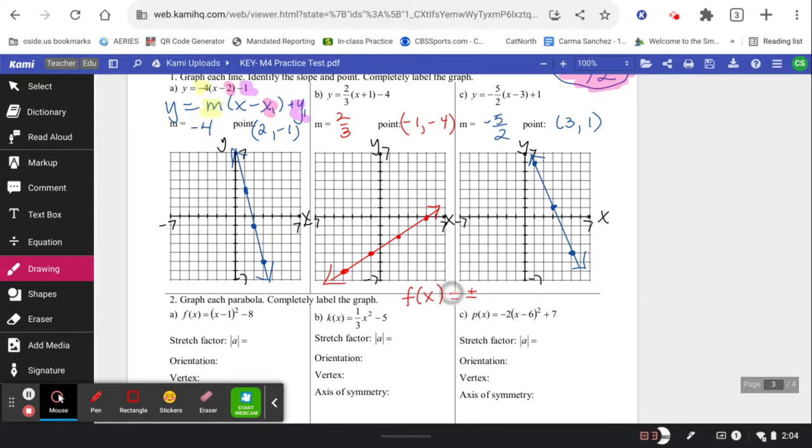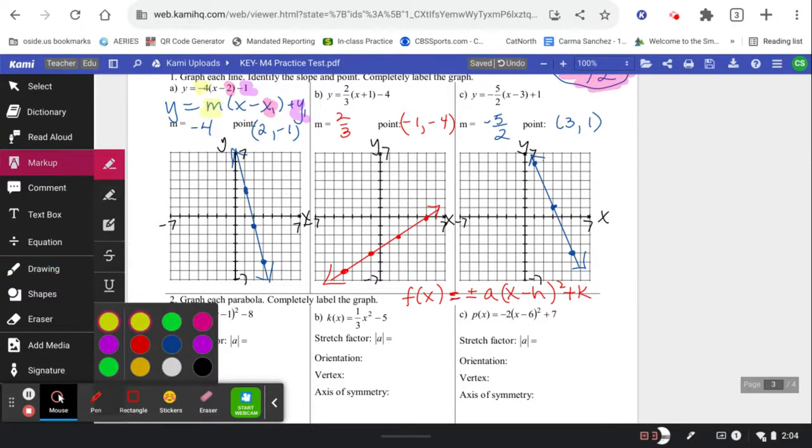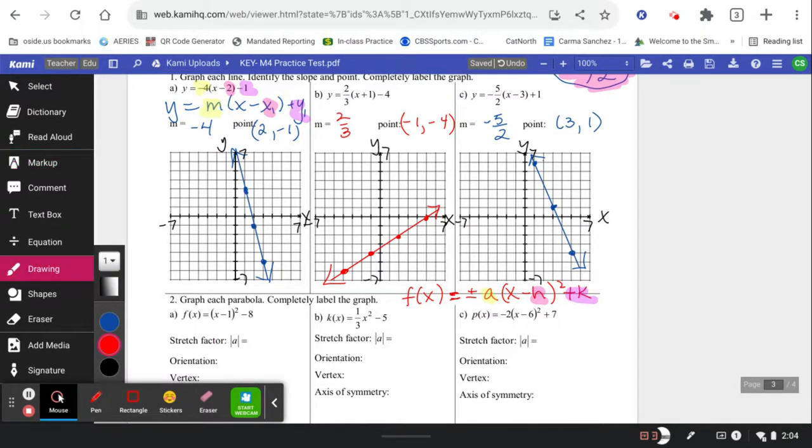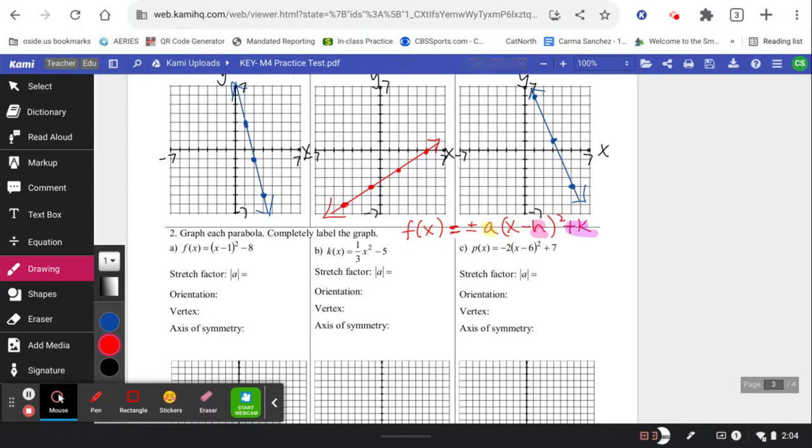So the orientation is a plus or minus in front. A value, A is your stretch. Where A value, your stretch, is the growth rate of your function. So similar to the slope of a linear, you've got this stretch growth of a parabola. And then just like before, you have this HK critical point. Instead of an x1, y1, any point on my parabola, I'm specifically looking for the critical point of its vertex.